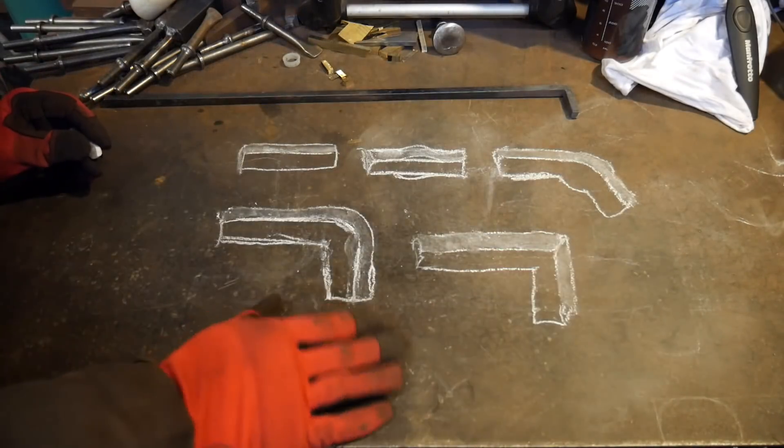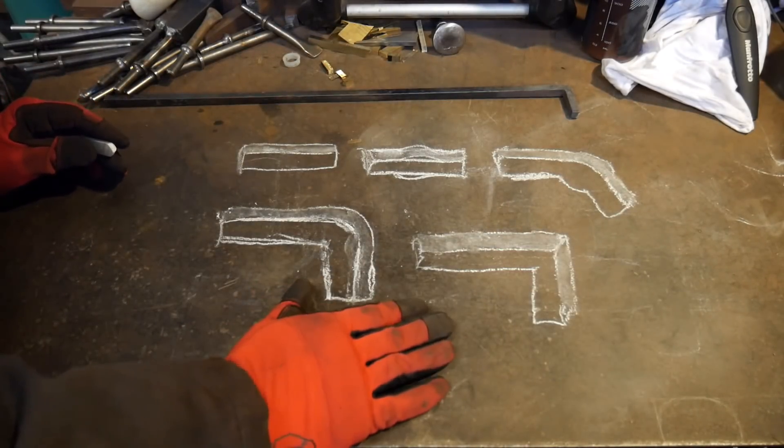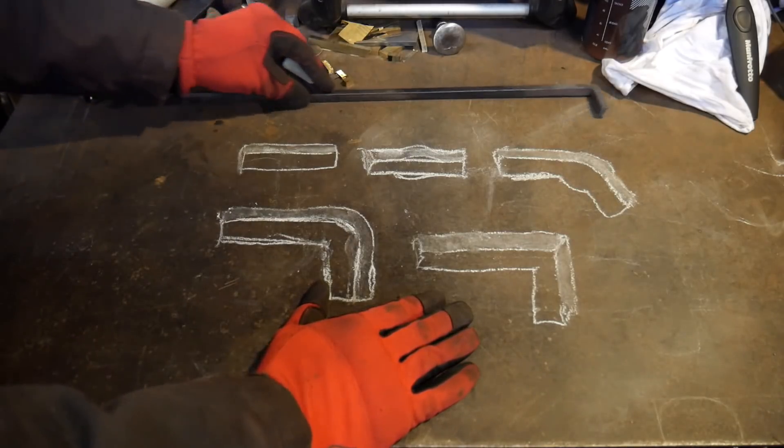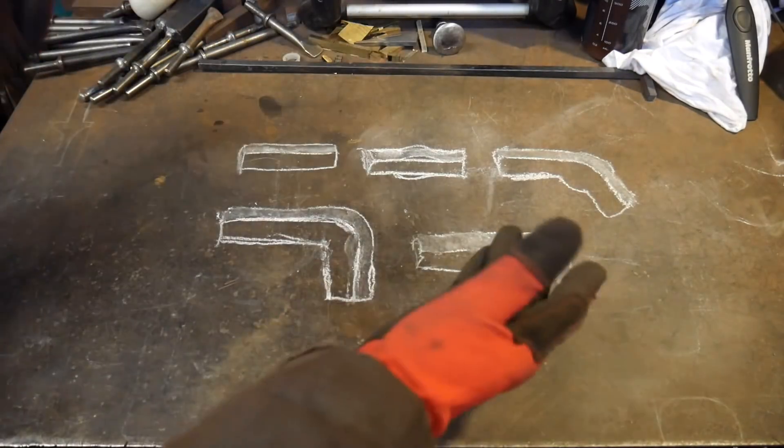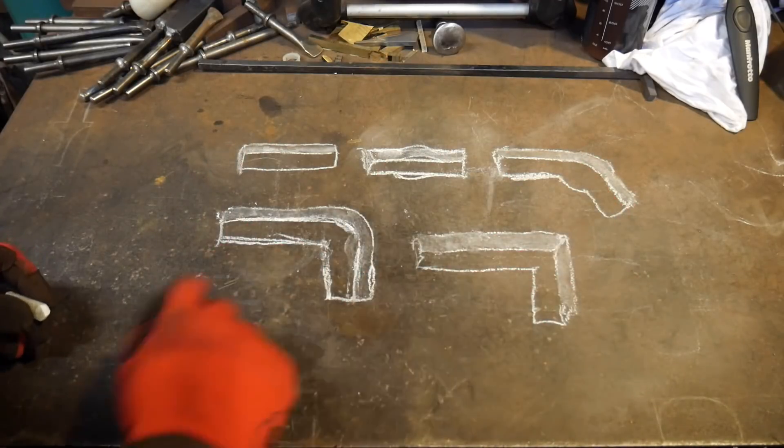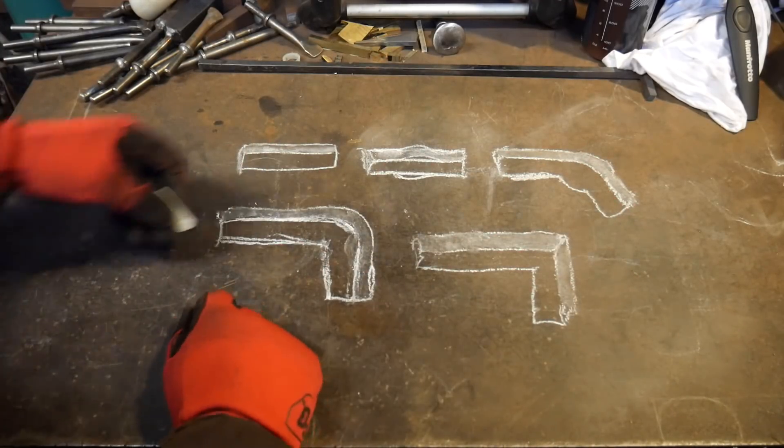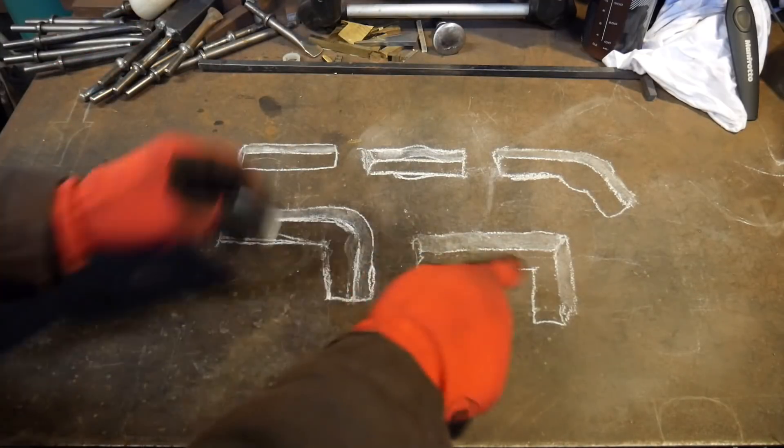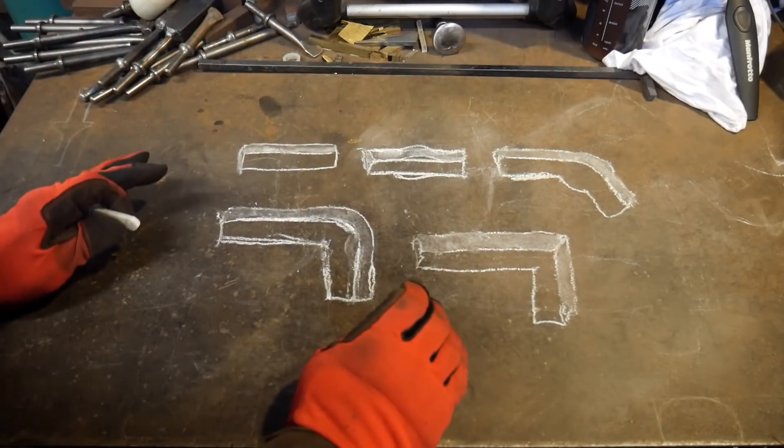So what I've got laid out here, you can screenshot this for your own purposes, is the different stages of creating an upset square corner. Now these aren't drawn to scale or anything, some of them are bigger than the others, but the principle is the same.